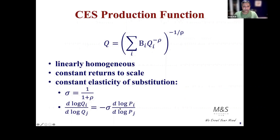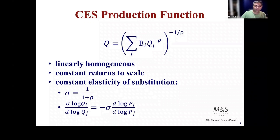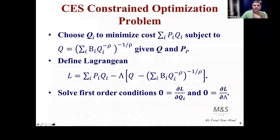You can think of it as bringing p here and q there. It's basically the percentage change in q with respect to p for i, and percentage change in q with respect to p for j. So it's the elasticity of substitution — how qi and qj are substituted — and that is captured by sigma.